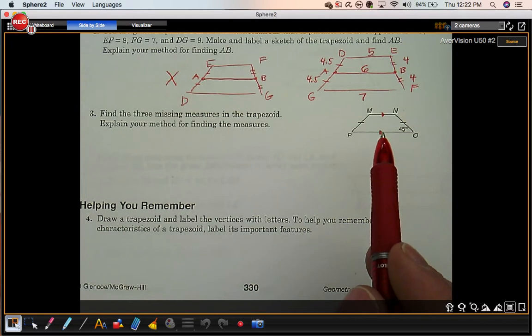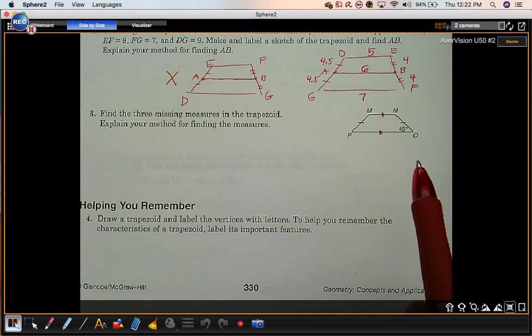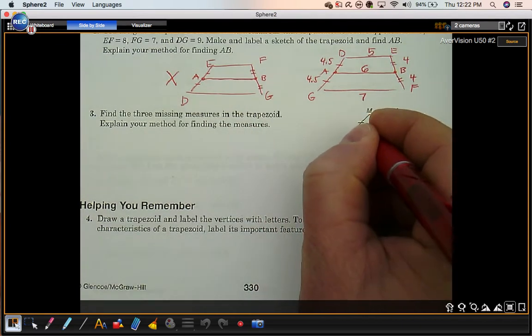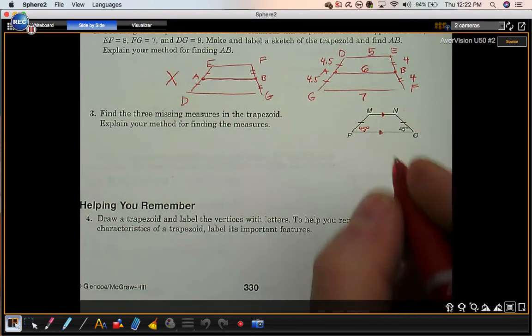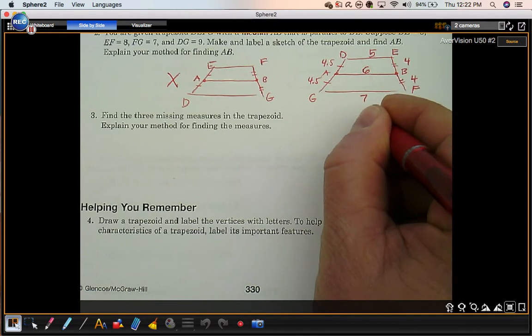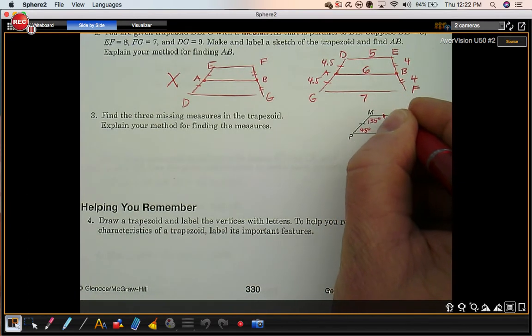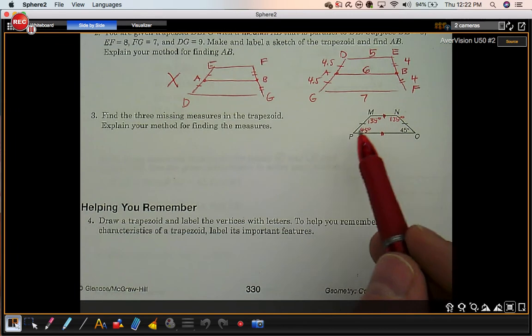If this trapezoid wasn't found to be isosceles, you wouldn't be able to do this. Base angles of an isosceles trapezoid are the same, so these are 45. These ones here are going to be 135. These add up to 180.